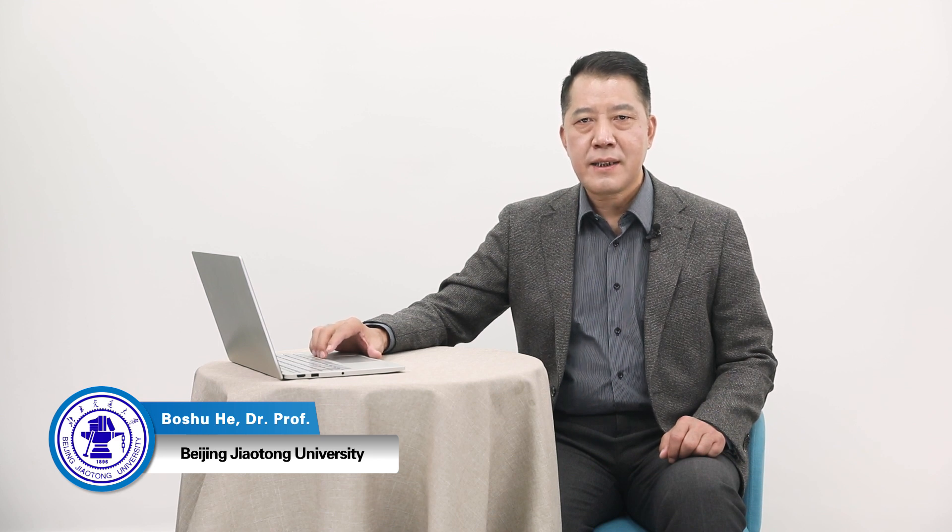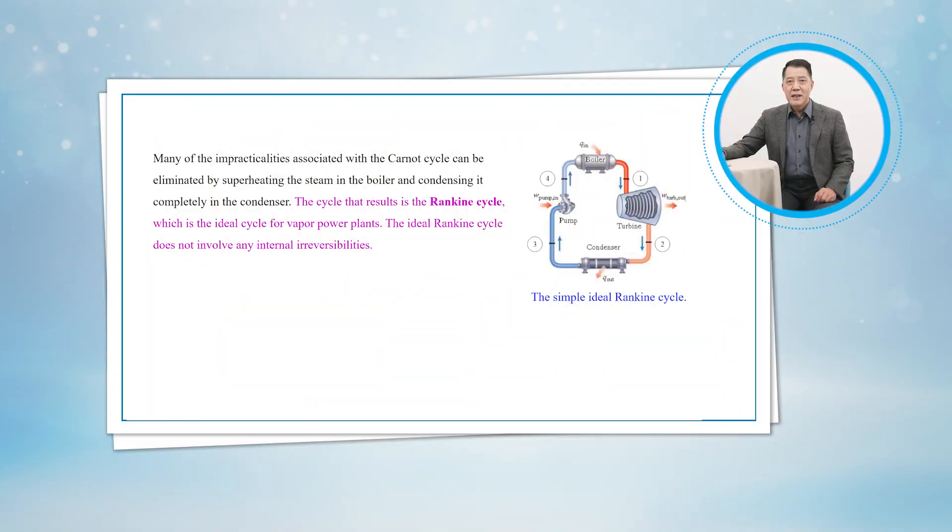The topic of this task is about the Rankine cycle. Many of the impracticalities associated with the Carnot cycle can be eliminated by superheating the steam in the boiler and condensing it completely in the condenser, as shown schematically on a T-S diagram in Figure 11-3. The cycle that results is the Rankine cycle, which is the ideal cycle for vapor-powered plants.